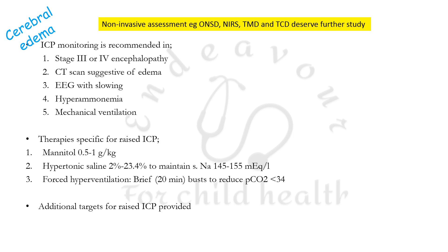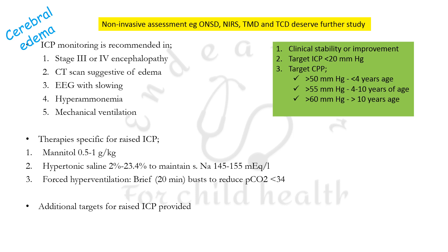Additional targets for monitoring raised ICP include: ICP levels maintained such that clinical stability or improvement occurs, ICP less than 20 mmHg, and cerebral perfusion pressure — which is mean arterial pressure minus intracranial pressure — targeted at more than 50 mmHg in children less than 4 years, more than 55 mmHg in children 4 to 10 years, and more than 60 mmHg in children more than 10 years of age.